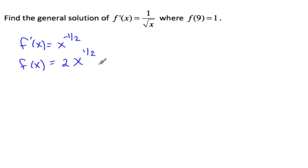So we'll multiply this by 2 and plus c. So now we have to solve for c so that we know that the function goes through the point 9, 1. So let's plug in 9, 1.